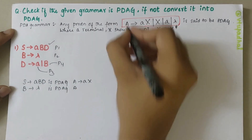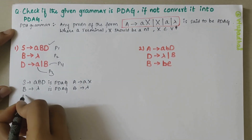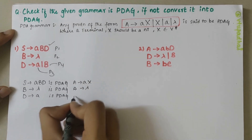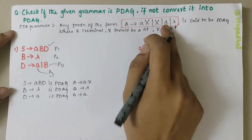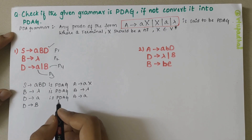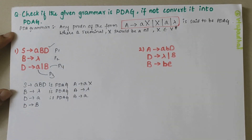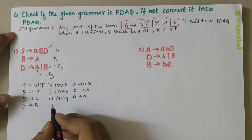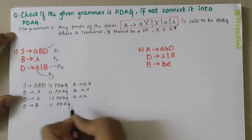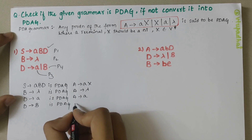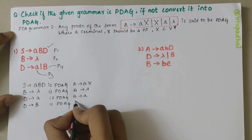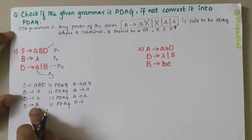B derives lambda is PDAG because it is of the form A derives lambda. Then D derives 'a' is also PDAG because it is of the form A derives small 'a'. And D derives B is again PDAG because it is of the form A derives X.